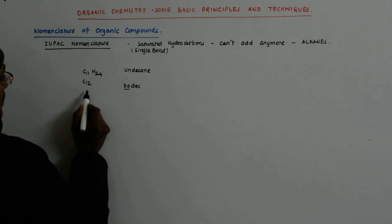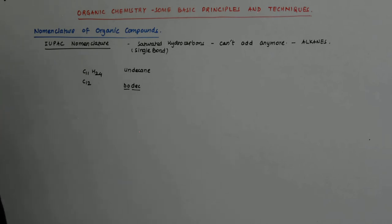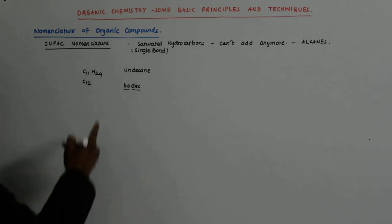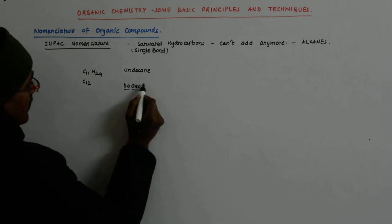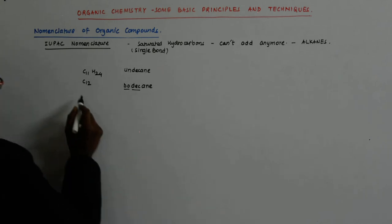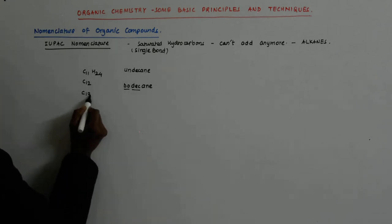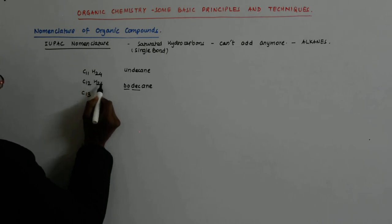And then, you understand? So dec was a word we had inherited. Do is 2. 2 and 10, that is 12. Dodecane, and it will be written without any spaces. So 13 will be, obviously, the corresponding hydrogens will be there.